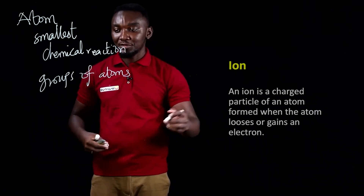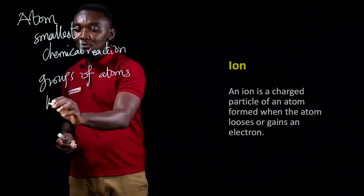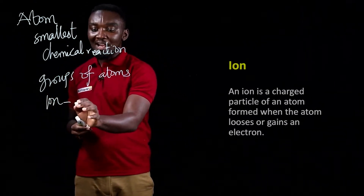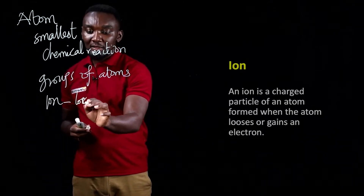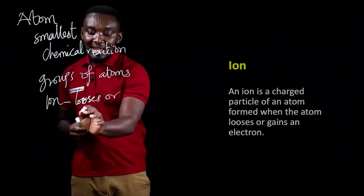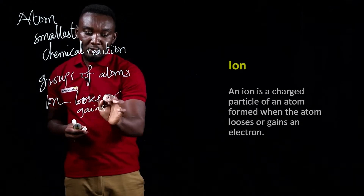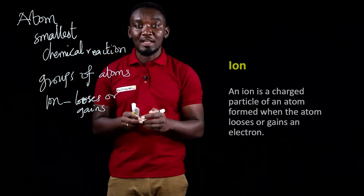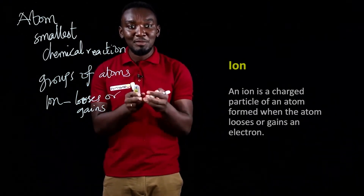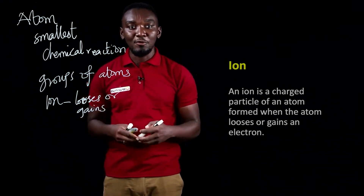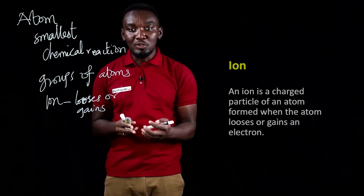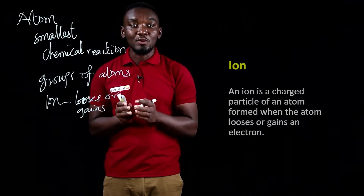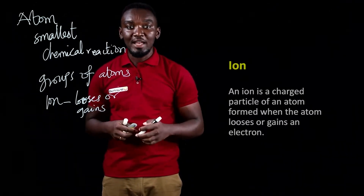We also have ions. Ions are charged particles of an atom — when the atom loses or gains an electron, it forms what we call an ion. So ions are charged particles of an atom formed when an atom loses or gains an electron. The particles that make up matter include atoms, molecules, and ions.